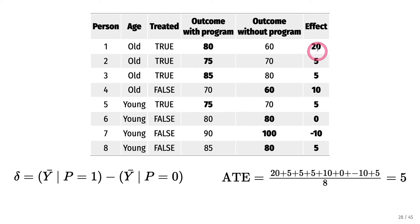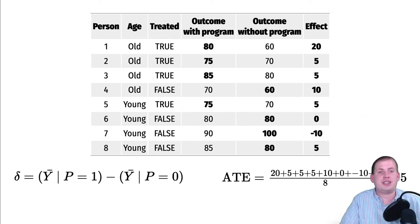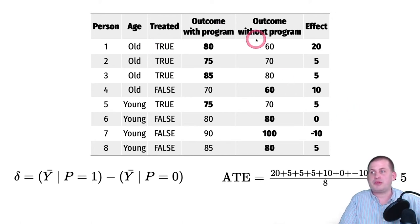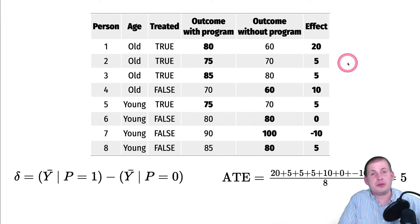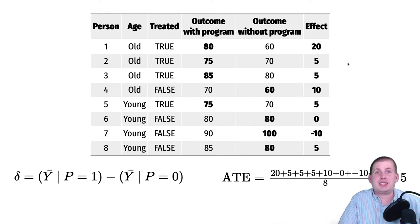We can only calculate this directly right now because this is fake data we made up and we can read people's minds to see what the causal effect would be. In real life, we can't actually measure that directly, and we'll show different ways of getting at it.